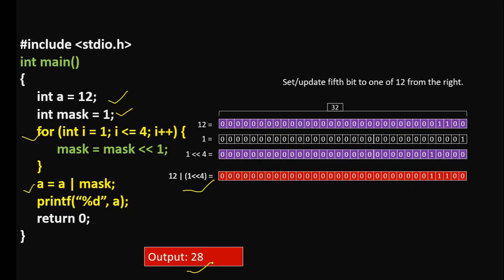Hope you guys have understood the concept of bit masking. This is called bit masking. We have a value and we have a mask — a mask is a value. That value will be applied to another value to do something. Before applying this mask, we are left shifting it to move our specific bit to the corresponding position where we want to set the bit. Then we're applying this mask to this value, and the process is called bit masking.